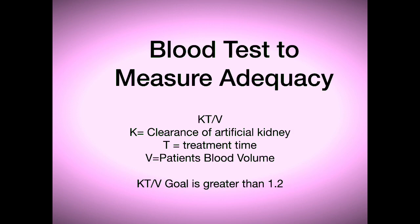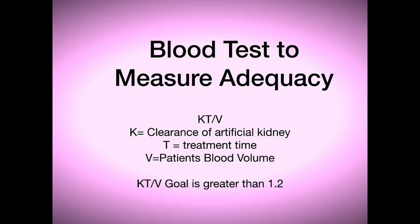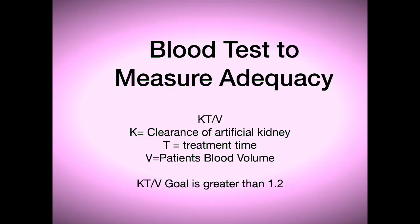The goal of dialysis is to process the patient's blood one complete time — all of the blood is processed through this kidney one time and then one fifth. One fifth of their blood is processed, and that's why it comes out to 1.2 or greater. The greater the KT over V number is, the better the treatment.